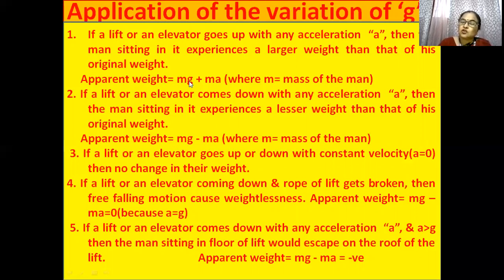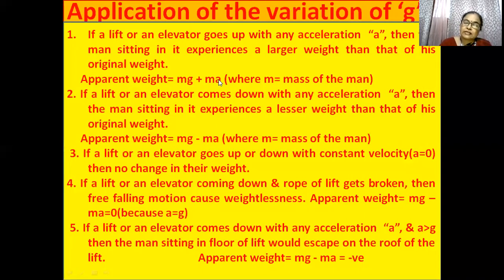Mass multiplied by gravitational acceleration gives the weight, and mass multiplied by acceleration also adds. So apparent weight becomes M(g + A) — that is, the gravitational acceleration plus the lift's acceleration multiplied by the mass. If the elevator goes up with accelerated motion, the weight increases.